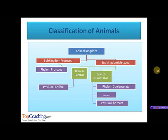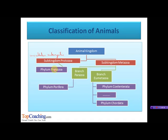The animal kingdom has been divided into two sub-kingdoms. The first one is sub-kingdom Protozoa and the other is sub-kingdom Metazoa. Protozoa includes unicellular eukaryotic animals with a single phylum, Protozoa. Its examples are Euglena, Amoeba, Paramecium, etc. We are going to discuss the details of phylum Protozoa in this session.